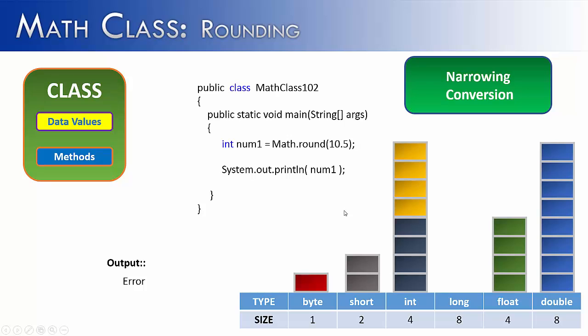Just like we did earlier, we would have to make a typecast. And when we do that, we can print out num1 and instead of an error, we would get 11.